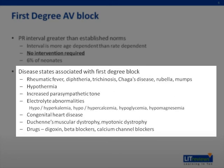Electrolyte abnormalities commonly cause a prolonged PR interval, specifically due to hypo- or hyperkalemia, hypo- or hypercalcemia, hypoglycemia, and hypomagnesemia. Different types of congenital heart disease can lead to first-degree AV block. Duchenne's muscular dystrophy and myotonic dystrophy affect the conduction system, and the first sign is typically prolongation of the PR interval. Several drugs can lengthen the PR interval; the most common are digoxin, beta blockers, and calcium channel blockers.